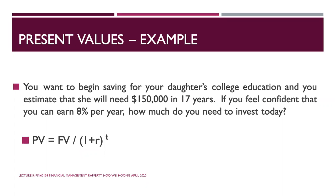Present value example: you want to begin saving for your daughter's college education and estimate she will need $150,000 in 17 years. If you are confident you can earn 8% per year, how much do you need to invest today? FV = $150,000, t = 17 years, r = 8%. Substitute these values into the PV formula to find how much you need to invest today.